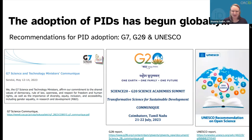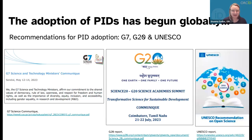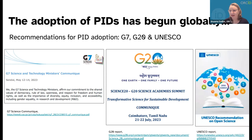A note: the G20 URL is currently broken because the presidency is transitioning from India to Brazil — which itself demonstrates the importance of persistent identifiers. Hopefully our colleagues will begin assigning DOIs so we can have persistent, reliable access to their important work. UNESCO also issued its Recommendation on Open Science, again with language supporting FAIR data principles and persistent identifiers.